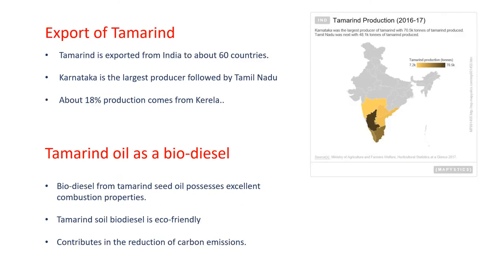Now let's talk about its export. Tamarind is exported from India to about 60 other countries. As you can see in the given map, Karnataka is the largest producer of tamarind in the country, followed by Tamil Nadu. Also, 18% of tamarind production comes from Kerala. So it also contributes to the foreign exchange for the country.